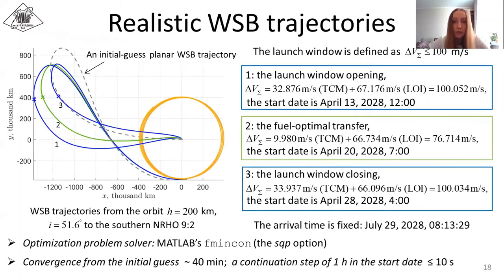So we illustrate the adaptation to the high fidelity ephemeris model of motion for trajectories from the Baikonur parking orbit to the 1000 near-rectilinear halo orbit. All of the optimization problems were solved by MATLAB's FMINCON solver and convergence from the planar initial guess took no more than 40 minutes.